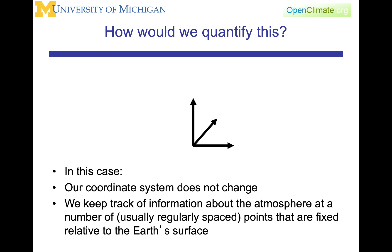When we keep track of information about the atmosphere in this case, from a dynamical or theoretical perspective, if we're doing a model we would have regularly spaced points. If we think about observing the Earth, we also use much the same idea, except the points may not be as regularly spaced — you could imagine regularly spaced points as being weather stations. However, satellites are observing where they can observe. This idea of sitting in one place in space and taking observations or developing a model is perhaps more intuitive to us as natural to the way we actually get things done.